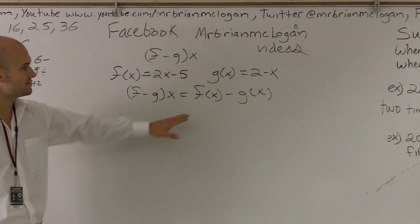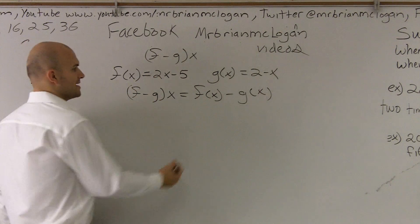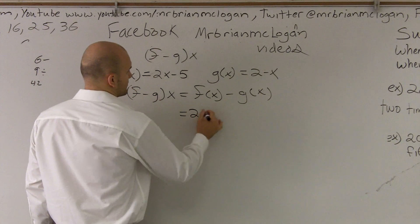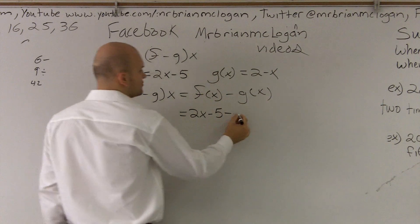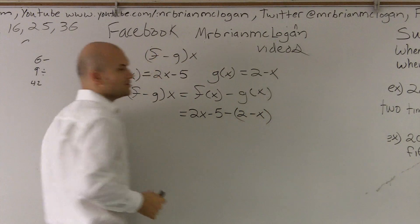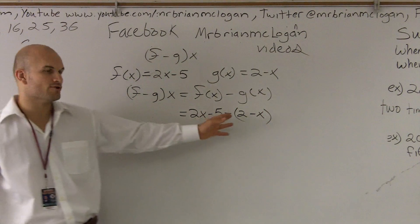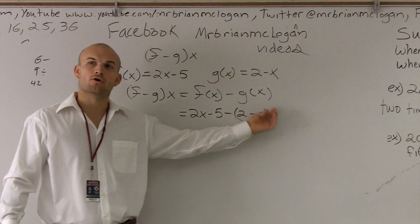What we're going to do is take our f of x function, which is 2x minus 5, and subtract g of x, which is 2 minus x. It's very important to put parentheses around it, because you're not subtracting just 2, you're subtracting the whole function.